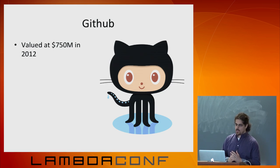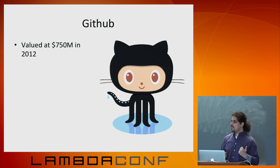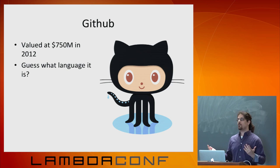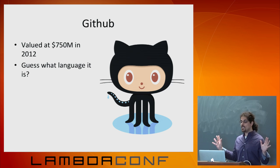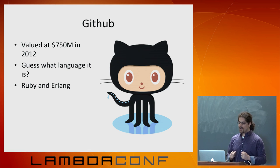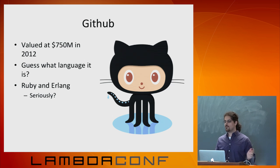Another example: GitHub, a couple of years ago, was valued at three-quarters of a billion dollars and stores all the source code for all these companies. Obviously it's probably written in Haskell because they can't afford to make mistakes, right? No — it's written in Ruby and Erlang. You might think you need to move to GitLab immediately, but those are also written in Ruby and Erlang.